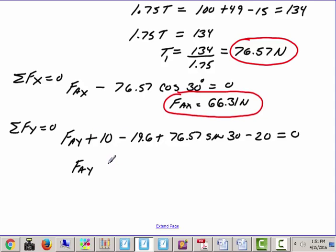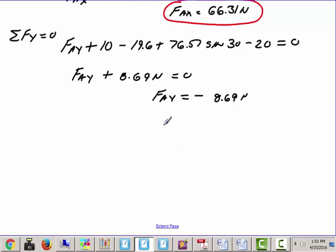We're going to have 10 minus 19.6 plus the 76.57 times the sine of 30 minus 20. That gives me F-A-Y plus 8.69 newtons equals 0. Now look what happens. I had F-A-Y going the wrong direction, which is perfectly fine. But notice how the math tells me that because I get a negative 8.69. So, what that means is F-A-Y needs to be going back the other way. It means I have the direction I determined it was going was incorrect. So, we got 8.69 newtons.